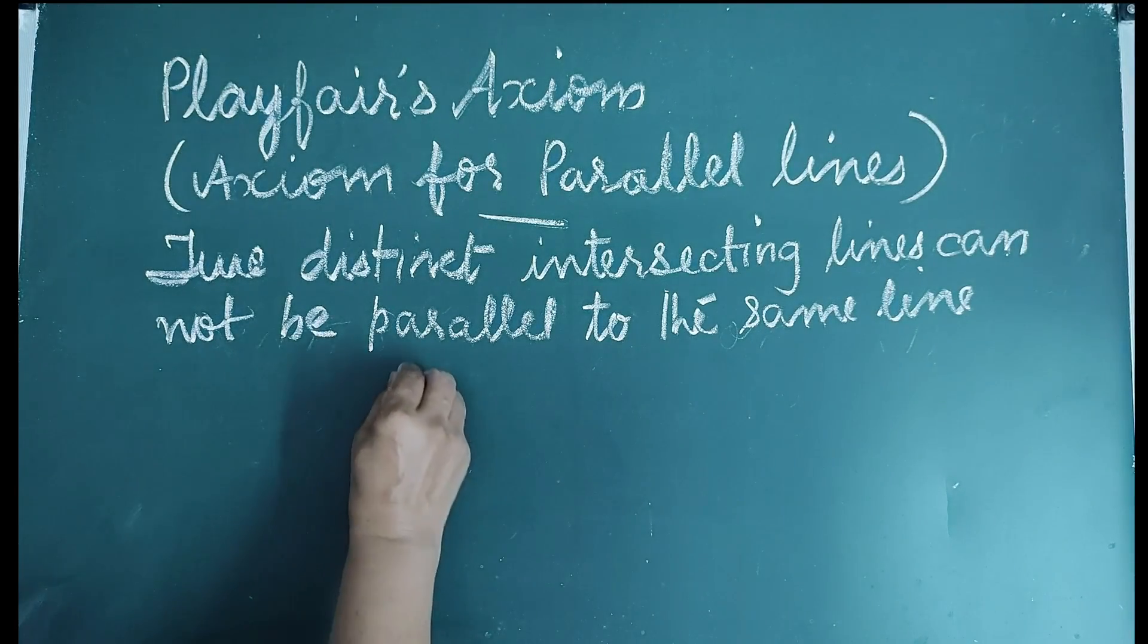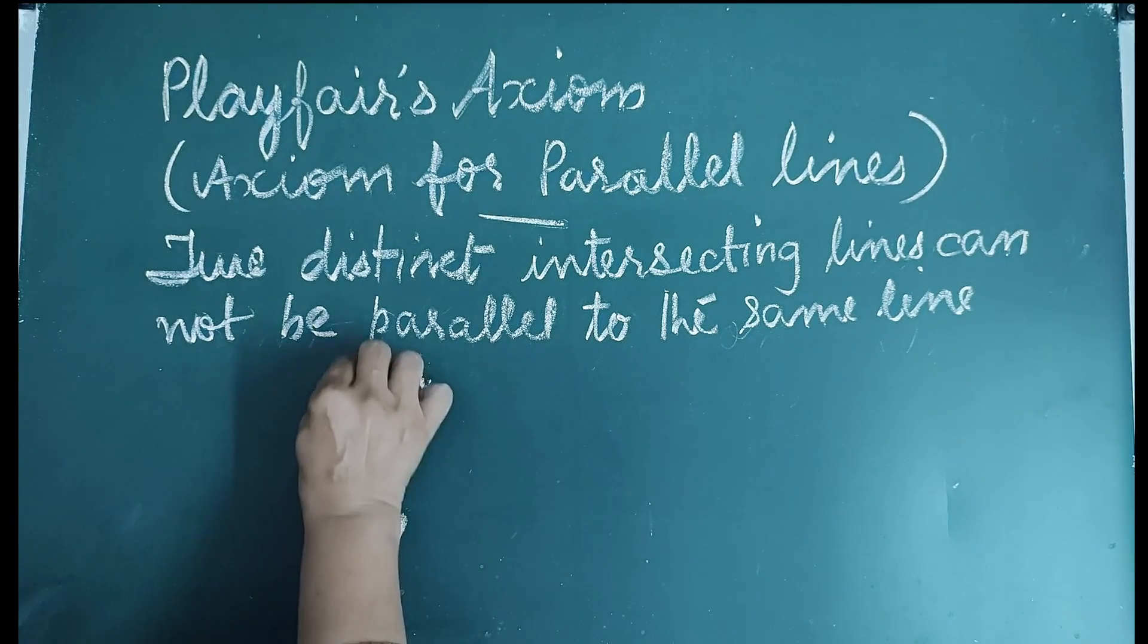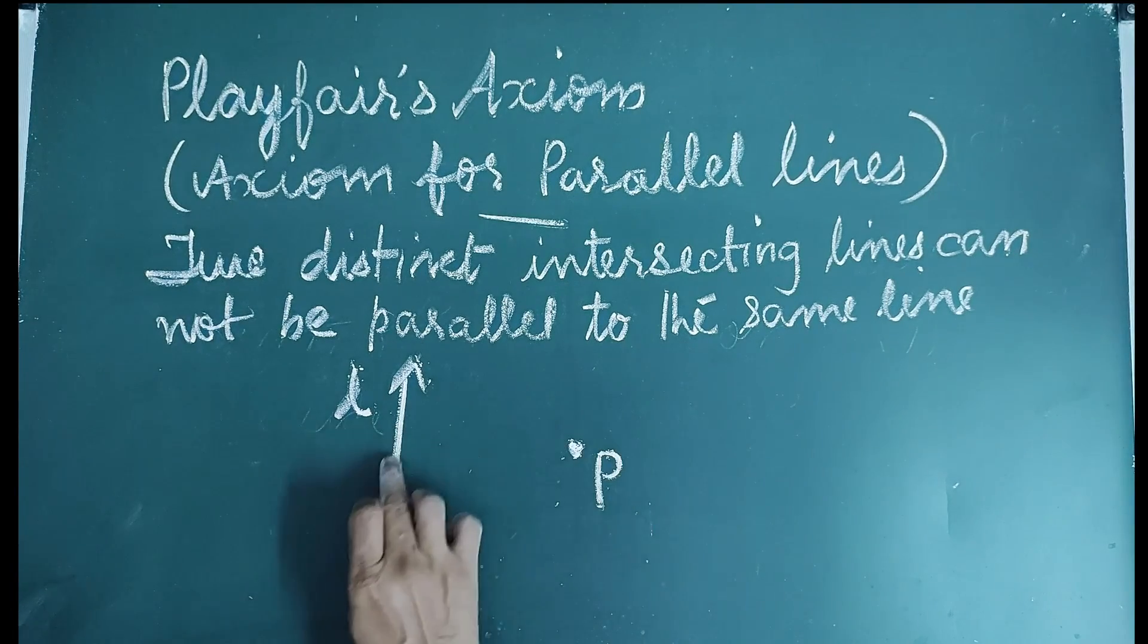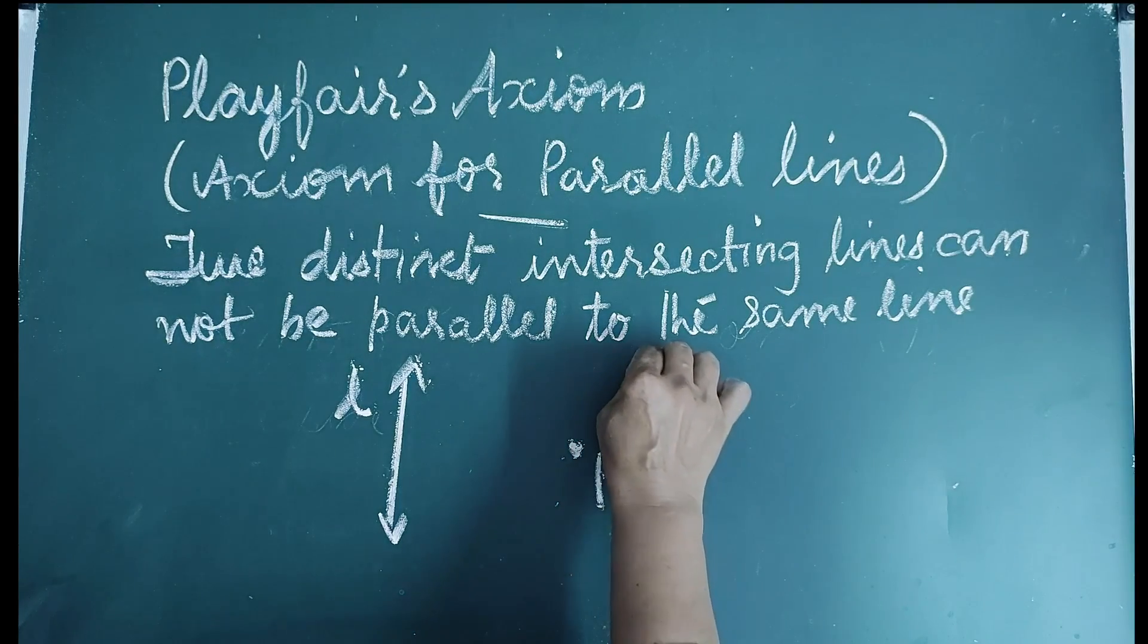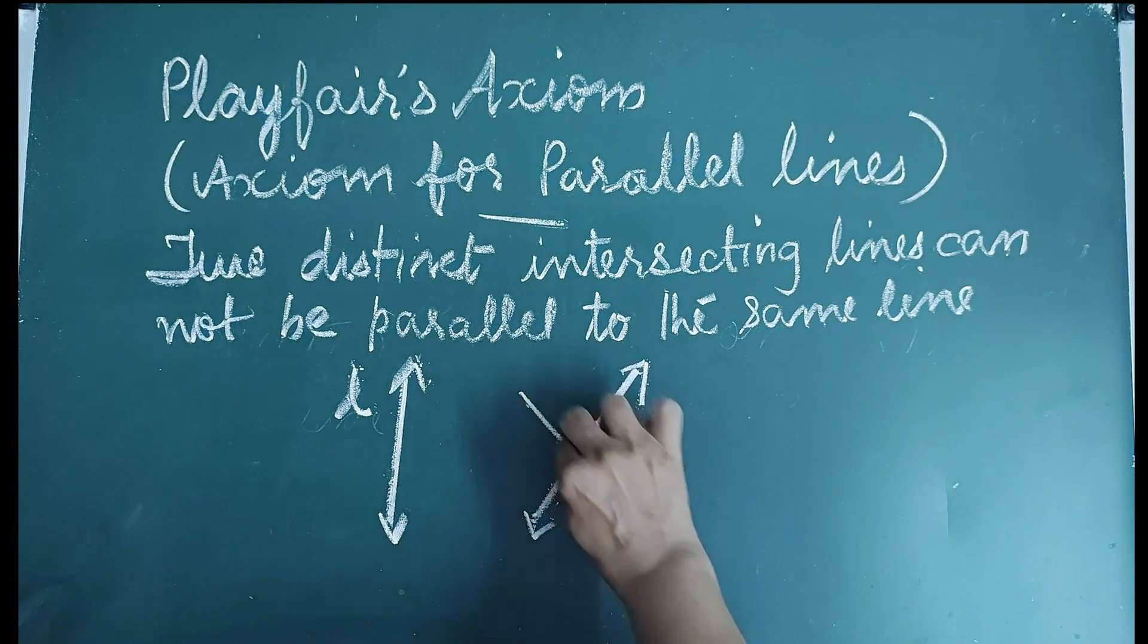Let L be a line and P is a point not lying on this line. Then, we can draw many lines through this point.